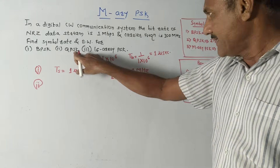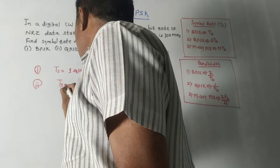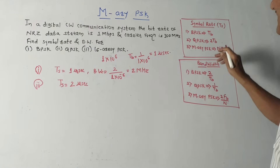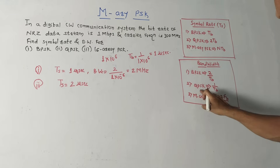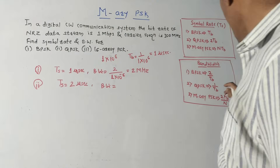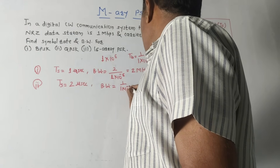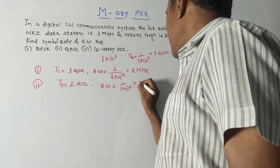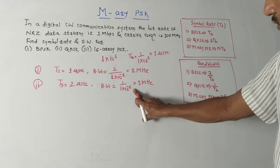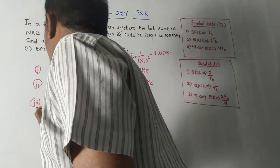For QPSK: the formula gives Ts = 2Tb. Since Tb = 1 μs, symbol rate Ts = 2 μs. Bandwidth of QPSK = 1/Tb = 1/(1 × 10⁻⁶) = 1 MHz.